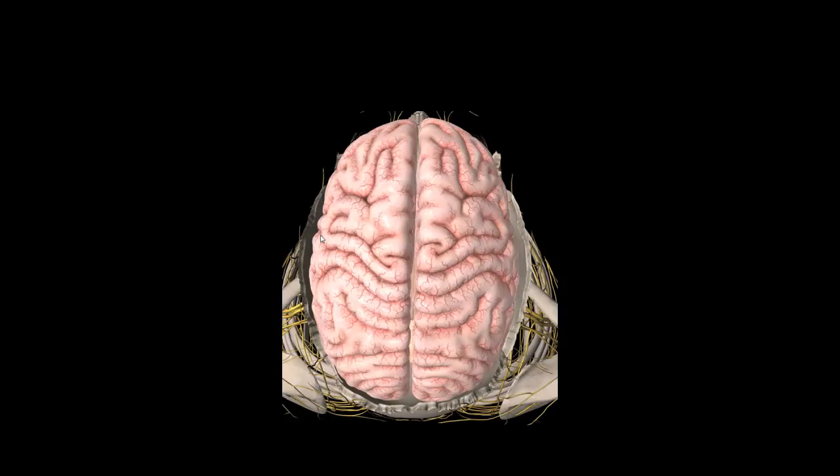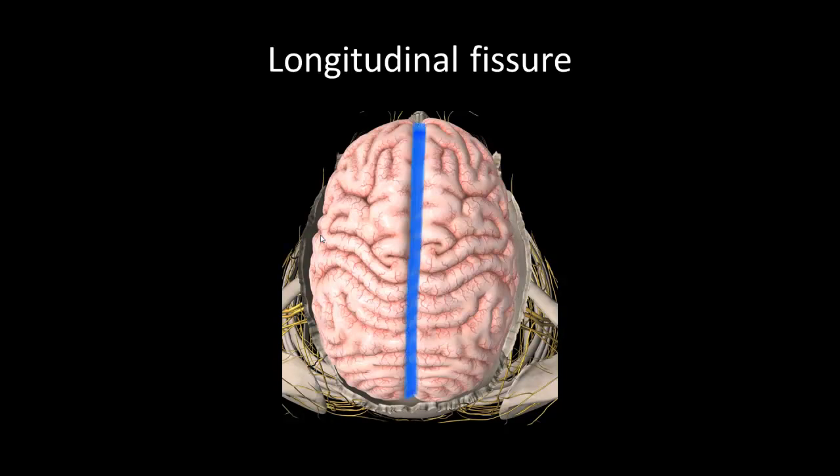Next we'll go on to your lab objectives, starting with cerebral landmarks. First we have the longitudinal fissure, highlighted here in blue. That's going to separate your right and left cerebral hemispheres, and that's also going to be where your falx cerebri is going to sit.